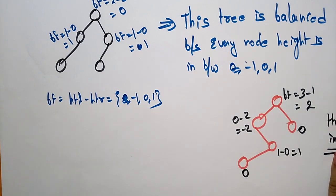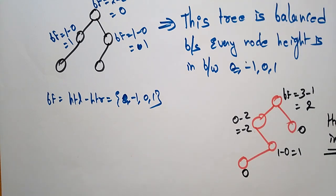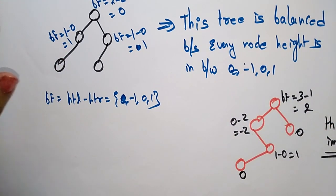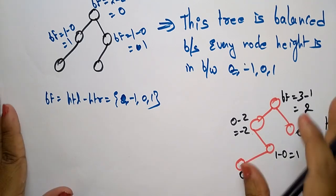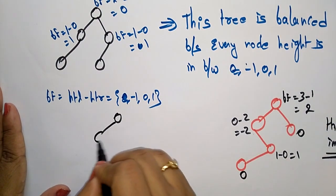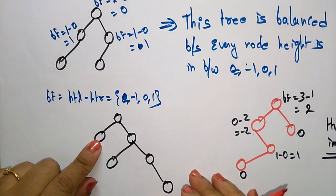Let me take another example so you understand how to calculate the balance factor. For this tree, the root node has height of left subtree = 1 and height of right subtree with 3 levels = 3, so 1 − 3 = −2. Since −2 is not in range, this tree is also imbalanced.